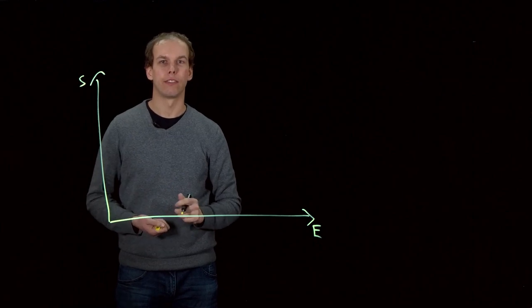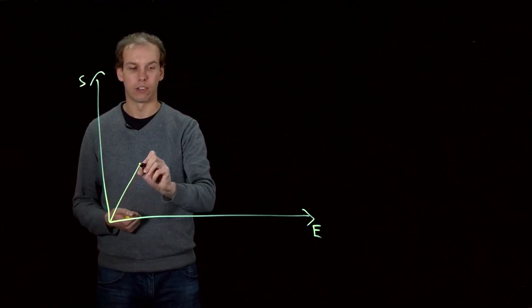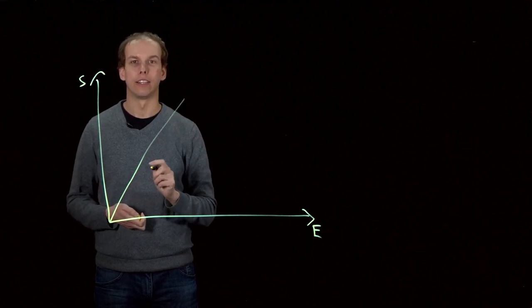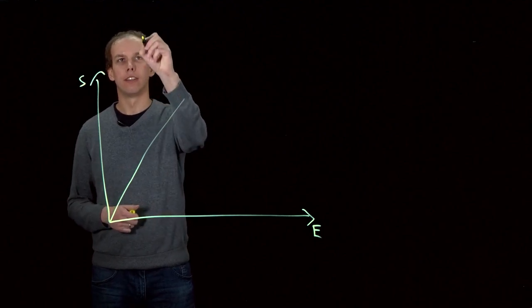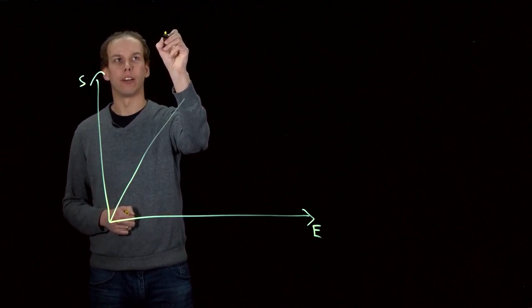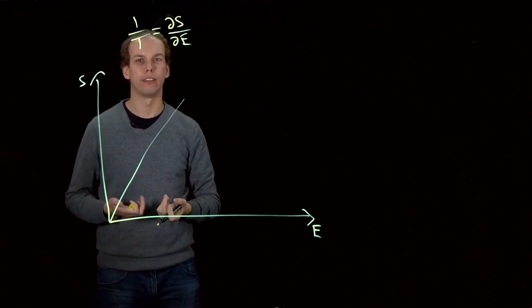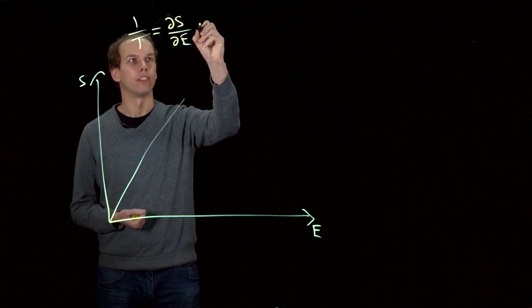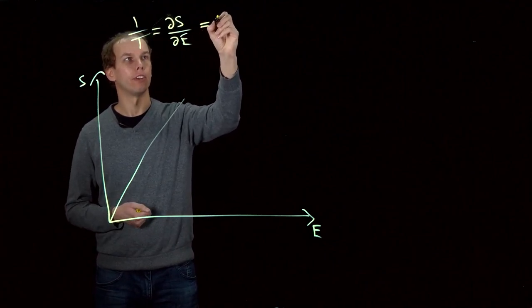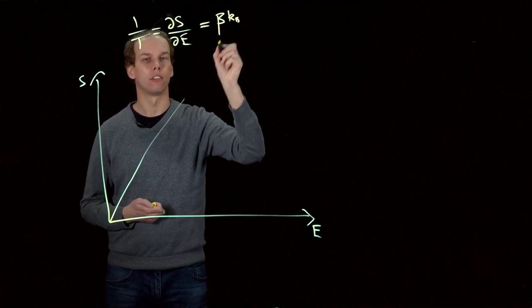Typically, as we add energy to a system, its entropy is going to increase. It's the gradient of this entropy with respect to energy graph that forms the definition of temperature. Temperature is inversely proportional to the gradient of this graph. Sometimes we refer to this inverse temperature by the Greek letter beta times Boltzmann's constant.